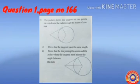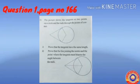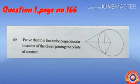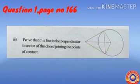The picture shows the tangents at two points on a circle and the radii through the points of contact. Question one: prove that the tangents have the same length. Question two: prove that the line joining the center and the point where the tangents meet bisects the angle between the radii. Question three: prove that this line is the perpendicular bisector of the chord joining the points of contact. Let's prove them one by one.